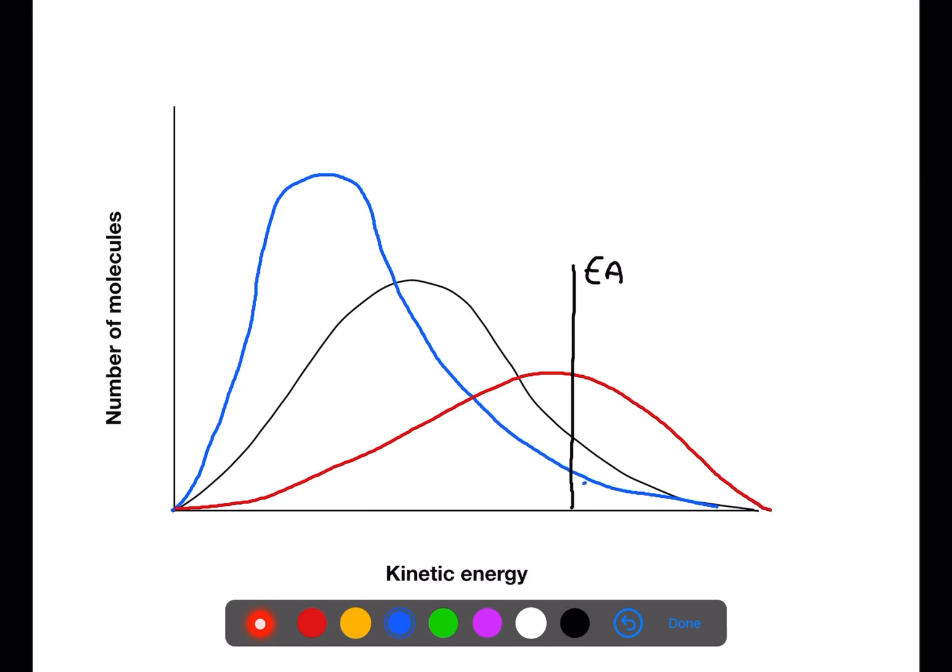We can add in a line to show the activation energy of the reaction. At a low temperature, only the blue shaded area have enough energy to react. At the medium temperature we can add in the black shaded line, and at a higher temperature the red shaded line.